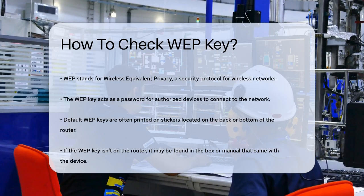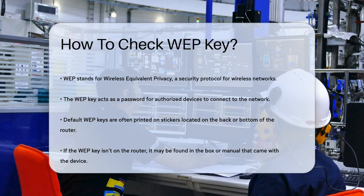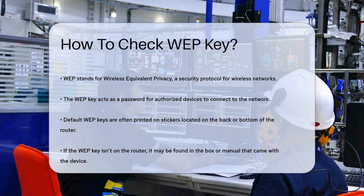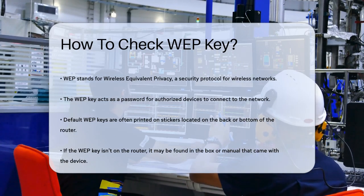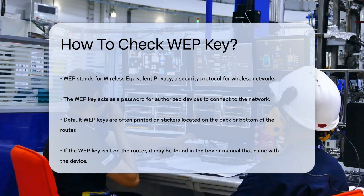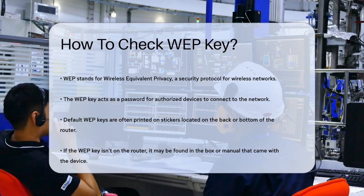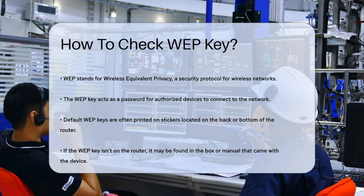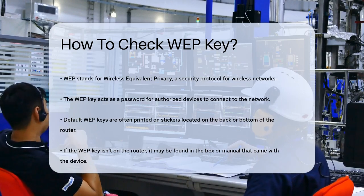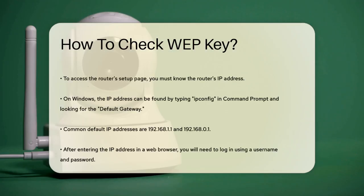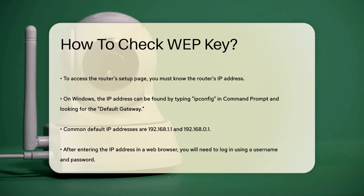One of the easiest ways to find your WEP key is to check your router. Often, the default WEP key is printed on a small sticker on the back or bottom of your router. If you haven't changed this key, it should still be the same as when you first set up your router. If the key isn't on the router, you might find it in the box or manual that came with your router. Manufacturers often include this information in these materials.